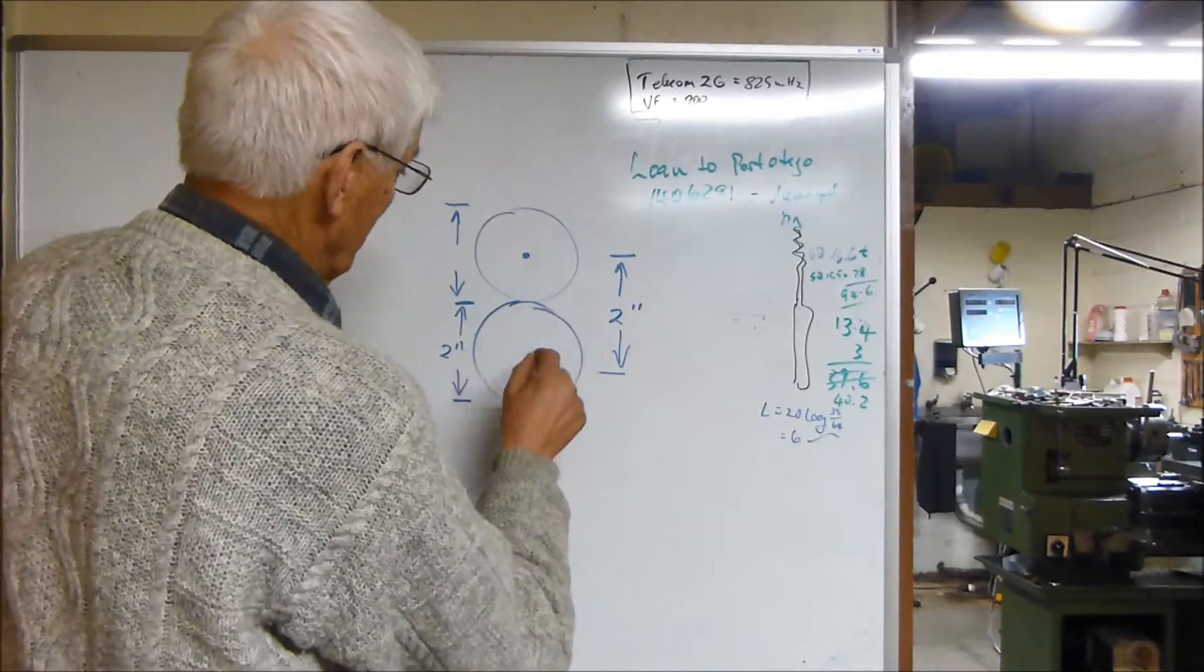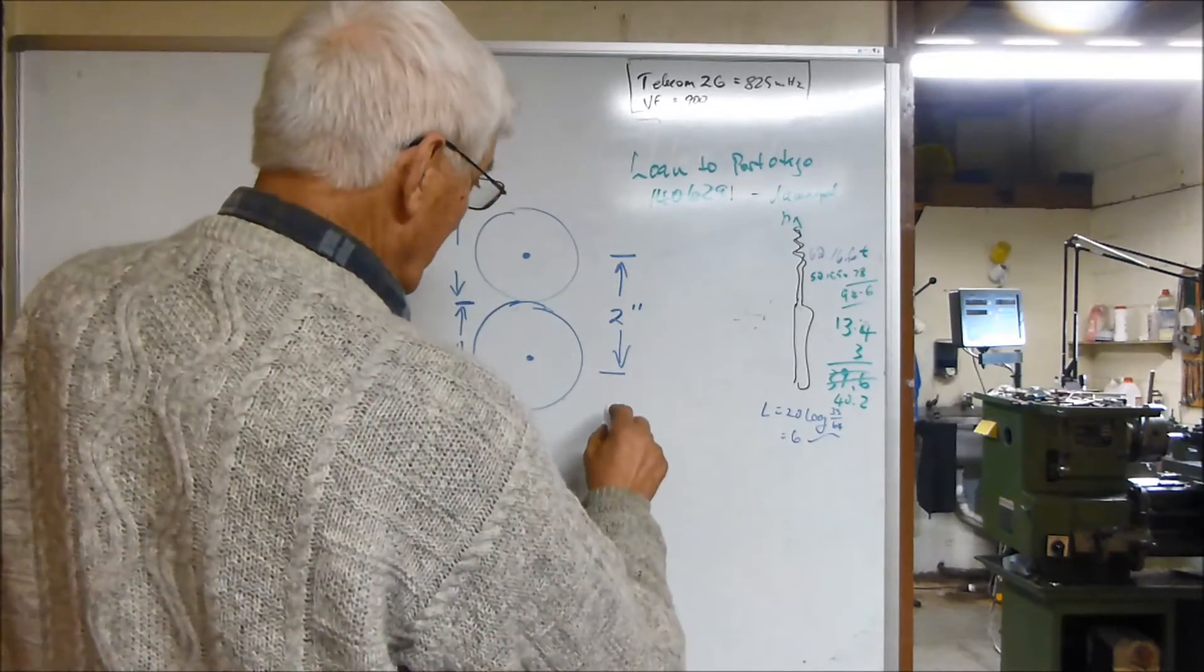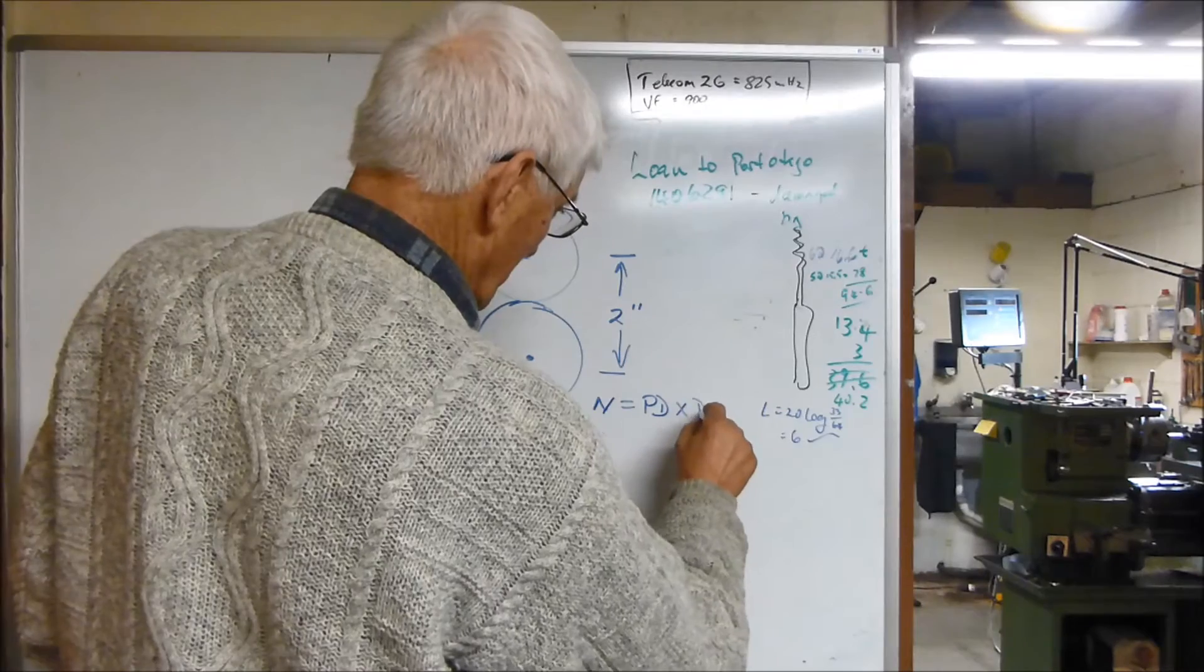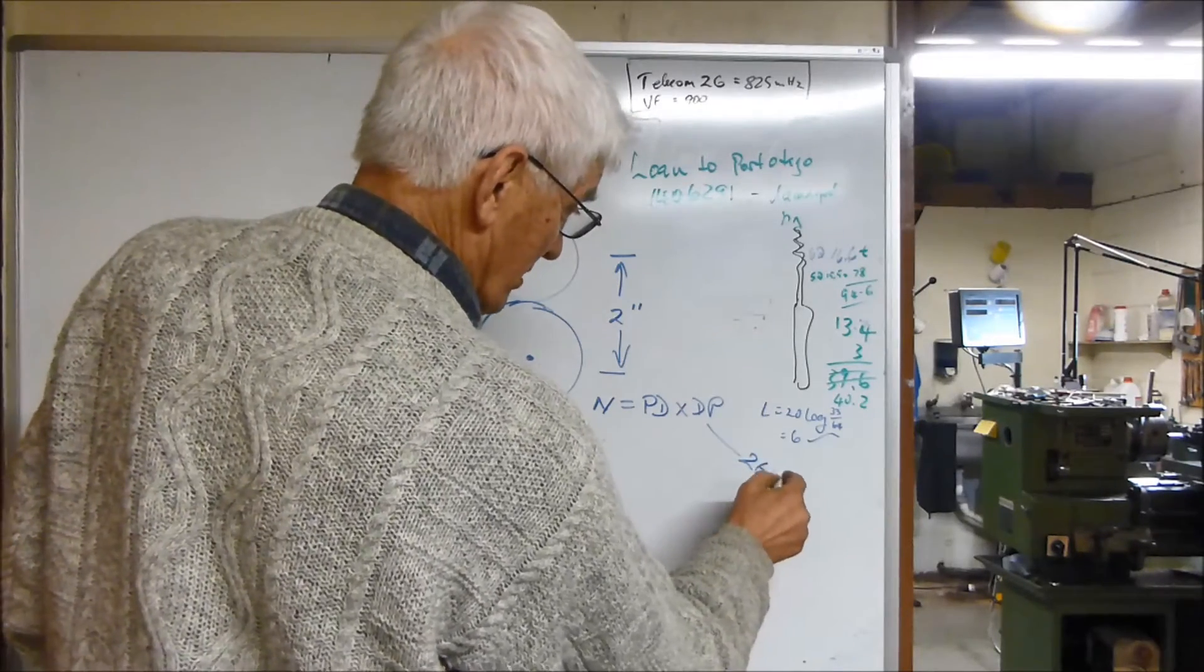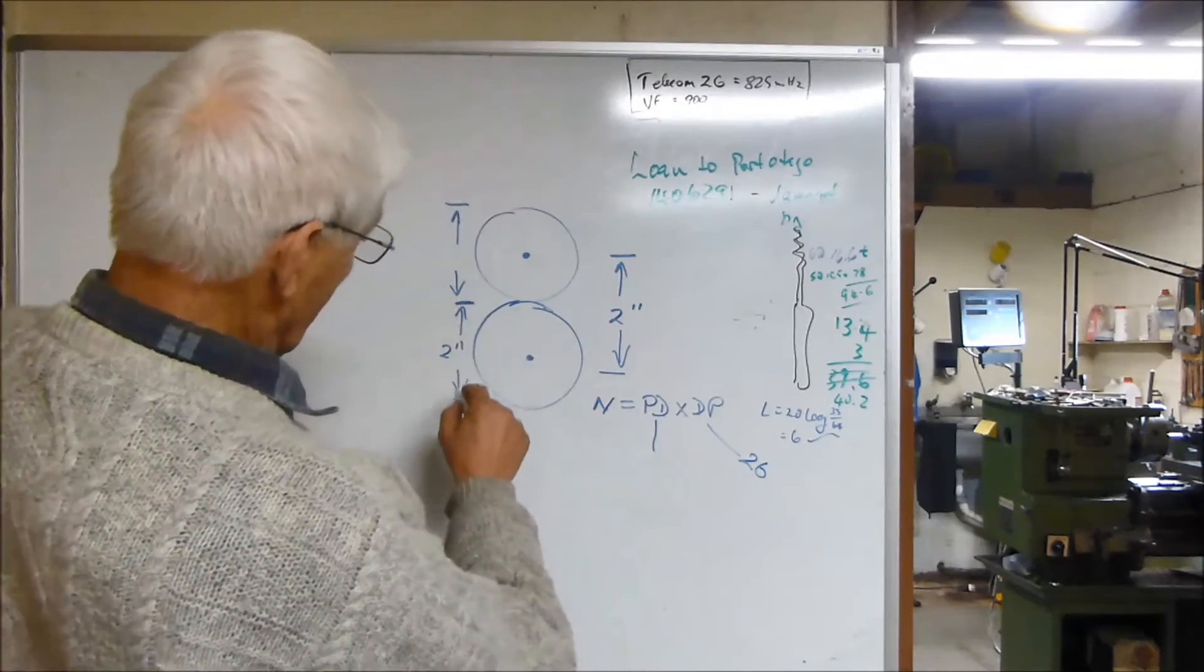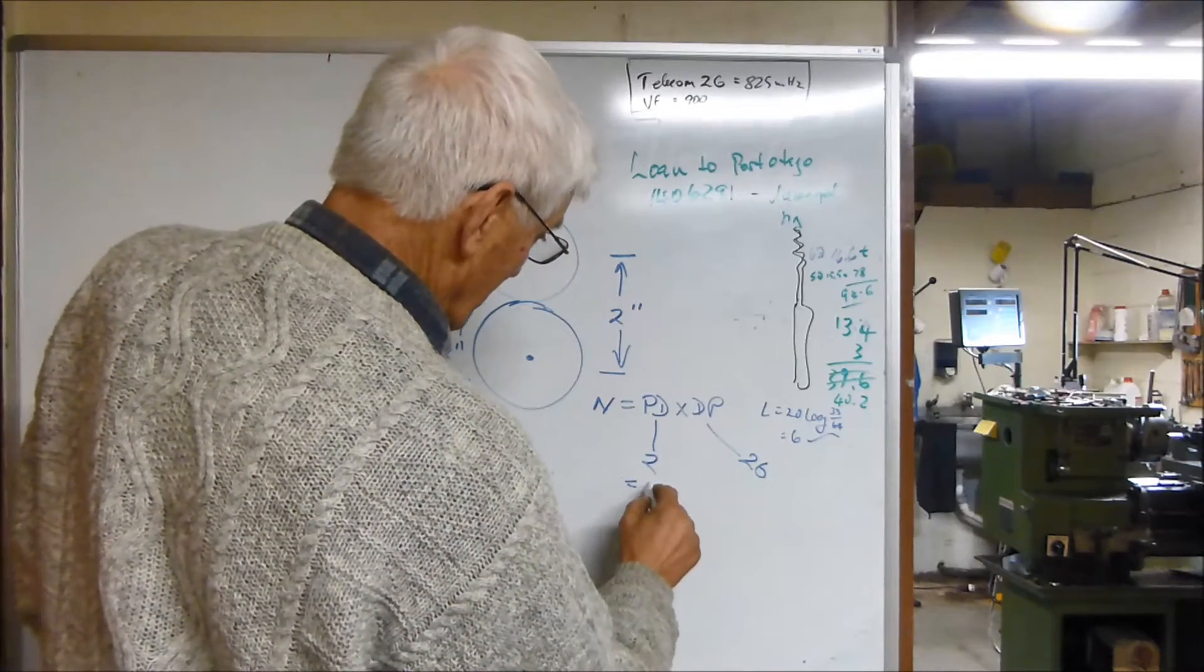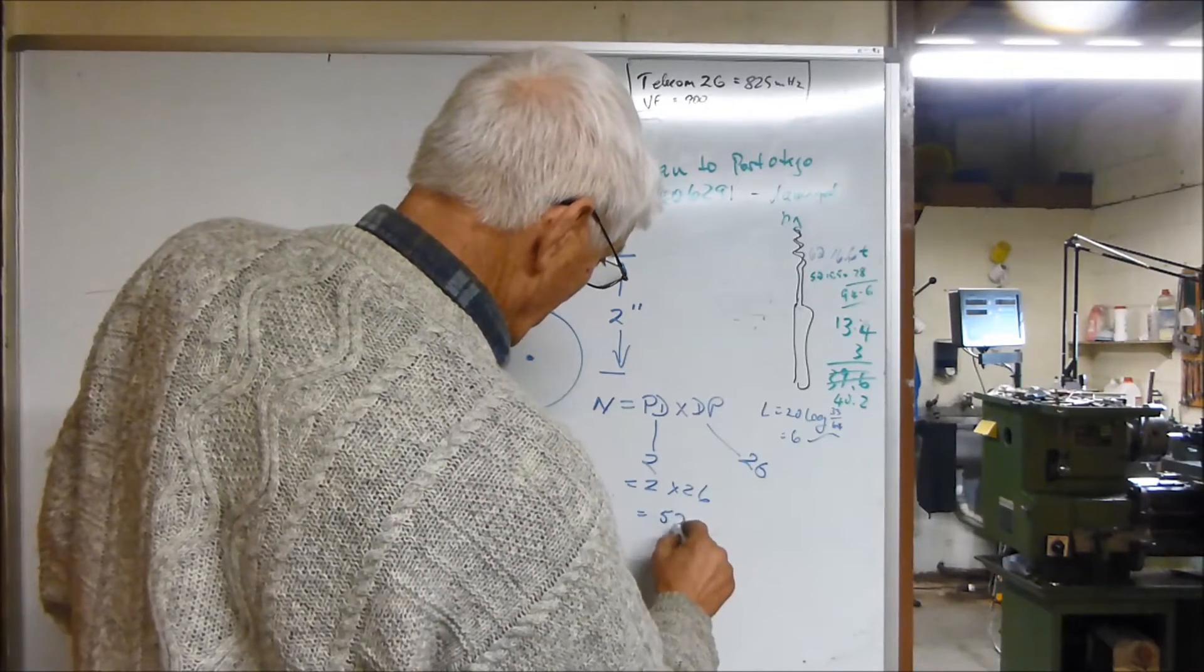Now I know that the pitch diameter is 2 inches, and so I need to work out the number of teeth. The formula for the number of teeth is the pitch diameter times the DP. My DP is 26 because I happen to have a 26 DP cutter, and the pitch diameter is 2 inches. So N is 2 times 26, which is 52 teeth.